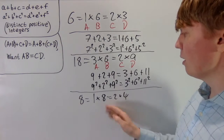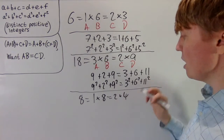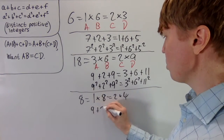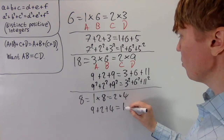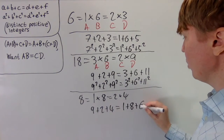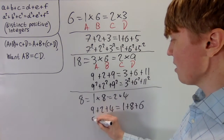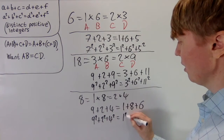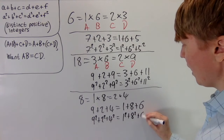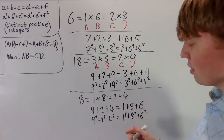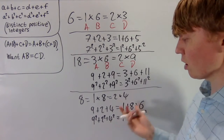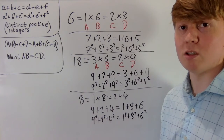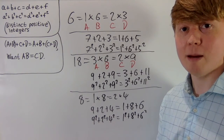With a=1, b=8, c=2, d=4, we get the grouping 9+2+4 equals 1+8+6. You can verify the sum of squares are also equal. So we can now generate lots of different examples where two sets of three integers share equal sums and equal sums of squares.